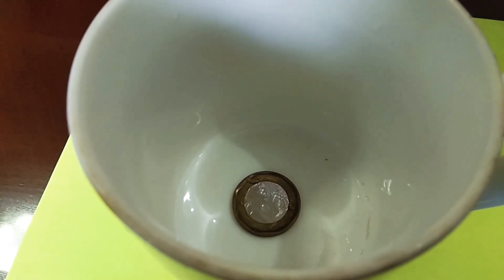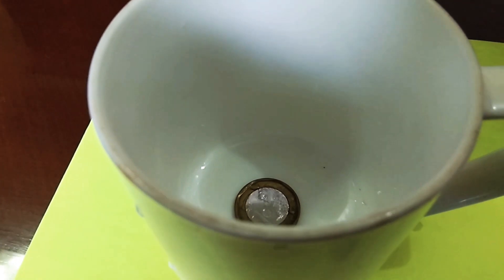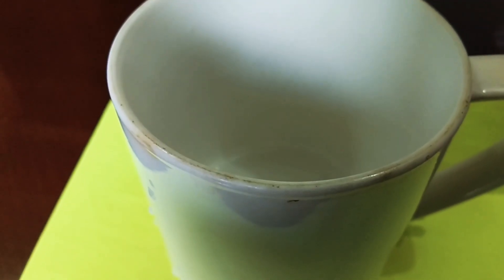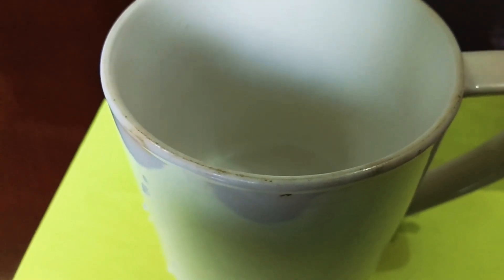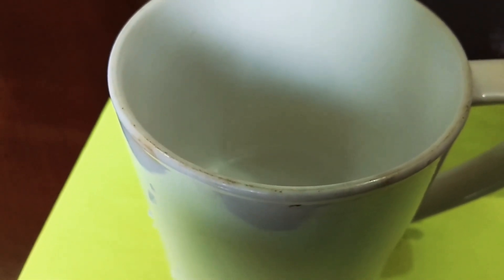Now what I do. I adjust the camera in such a way that the coin is not visible. I adjust the camera in such a way that coin is not at all visible. Now let's check out what happens when water is poured into the cup.